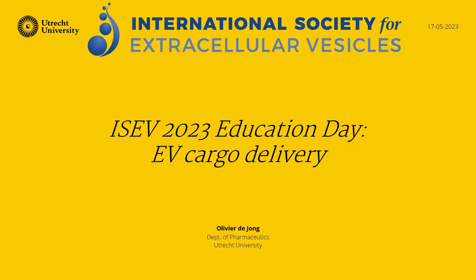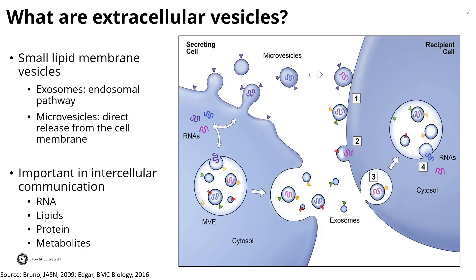I work for the Department of Pharmaceutics and focus on EV cargo delivery. As part of this education day, I'd like to discuss some basic processes that are very important for that. Most of you are familiar with extracellular vesicles, but for clarity, in this topic I'm mainly referring to exosomes and ectosomes. They're a very interesting tool for EV cargo delivery because of their natural intrinsic capacity to deliver RNA, lipids, proteins, and metabolites — all sorts of molecules — due to their role in intercellular communication.